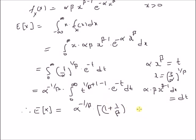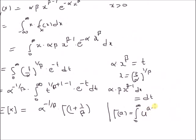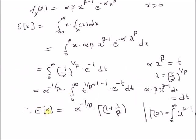This is valid because by definition, the gamma function is Gamma(a) = integral from 0 to infinity of u^(a - 1) * e^(-u) du. Using this definition, we get E[x] = alpha^(-1/beta) * Gamma(1 + 1/beta).